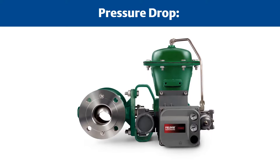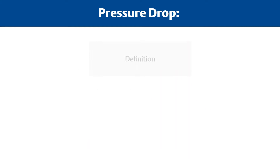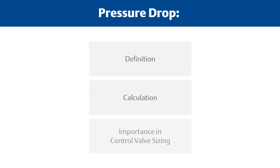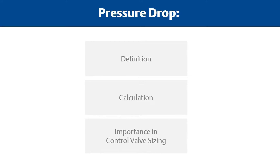Pressure drop, also known as pressure loss, is an important selection criteria for control valves as it's used in the sizing calculation. Let's define the term pressure drop, show how it's calculated, and discuss why it's important for engineers designing flow systems.